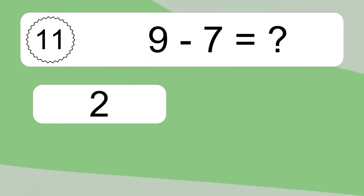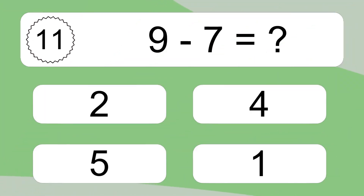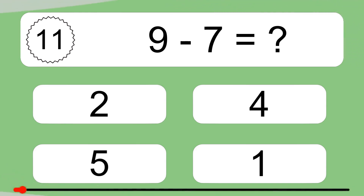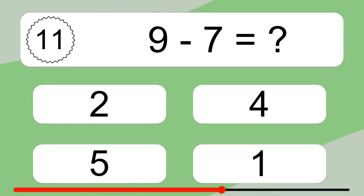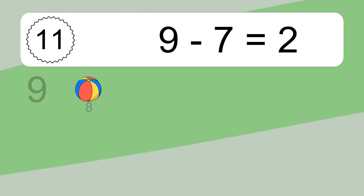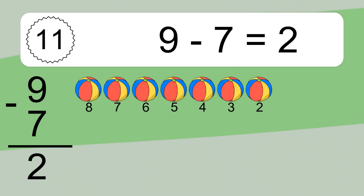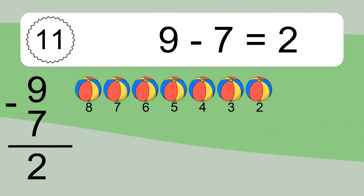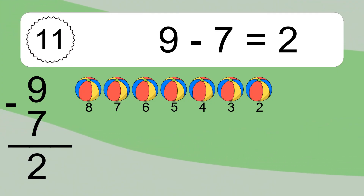9 minus 7 equals what? 9 minus 7 equals 2. Let's count it. 8, 7, 6, 5, 4, 3, 2.